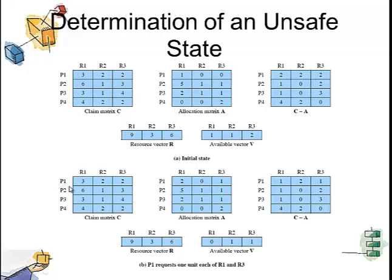Now let us see what an unsafe state is. If instead of P2, the first process executed were P1, it leads to an unsafe state or deadlock, because P1 requires resources 1,2,1 while the available vector is only 0,1,1. The request for P1 cannot be granted since it wants resources already allocated to other processes, leaving the system in a deadlock state.